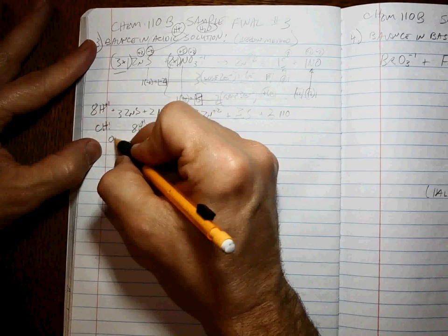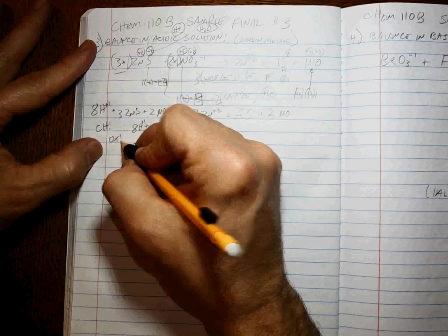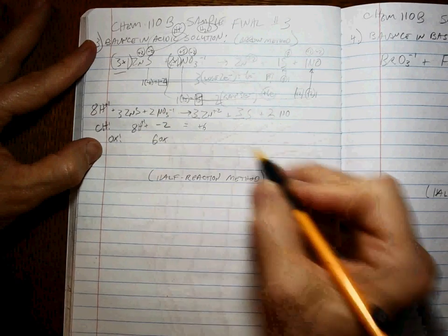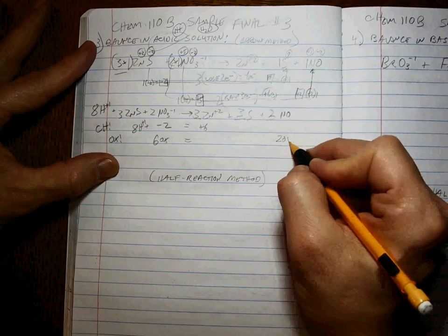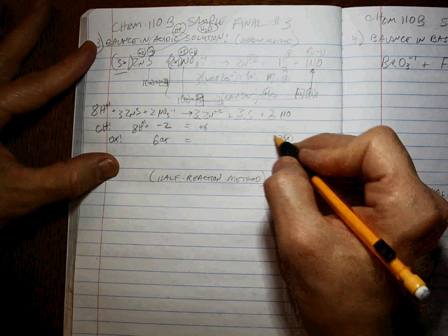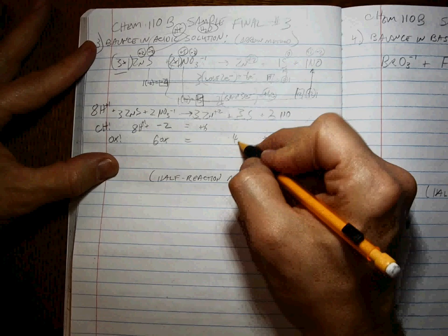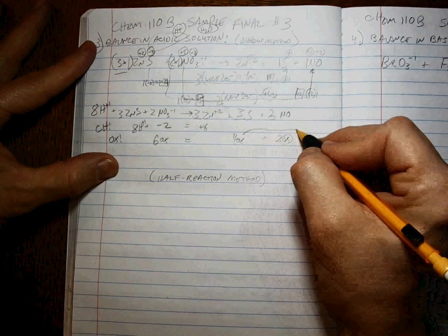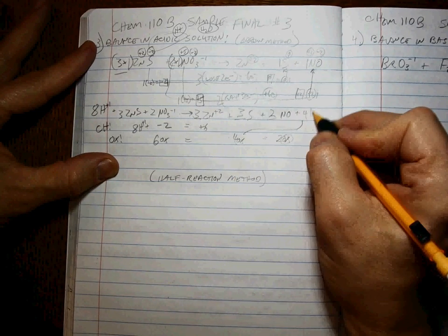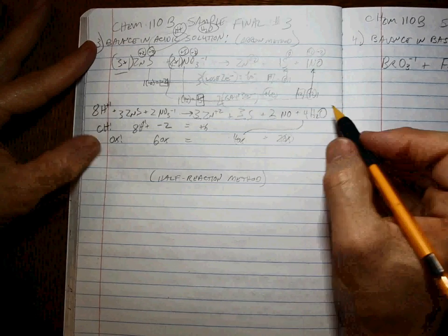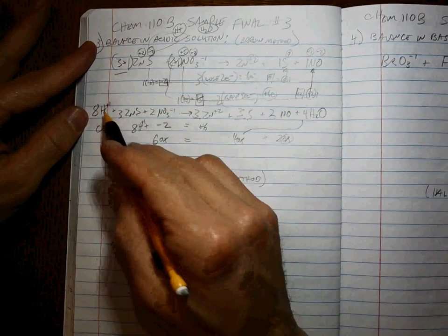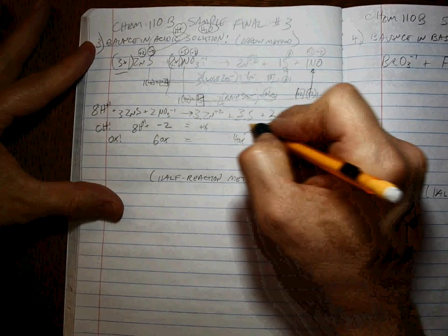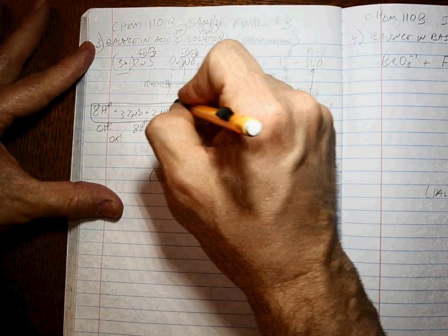Okay, and then we want to balance the oxygen. Oxygen - well, we've got six oxygens over here and we've got two oxygens here, so we need to add four oxygens. That's by adding four waters. And if everything else works out, that's a total of eight hydrogens, eight hydrogens, so it checks out. That's a balanced equation.